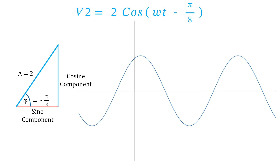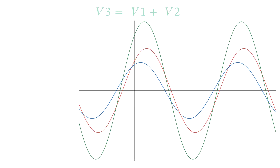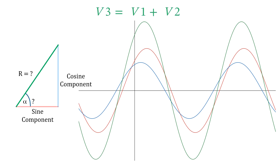v2 is 2 cos(ωt − π/8) radians, which is 22.5 degrees, so it's lagging. Because there's a phase shift, it'll have a sine component and a cosine component. If we square them, add them, and square root using Pythagoras, we find the amplitude is 2 volts, and using tan to the minus one, the phase shift is minus pi over eight. When we add v1 and v2 to get v3, we add their sine components together and their cosine components together.